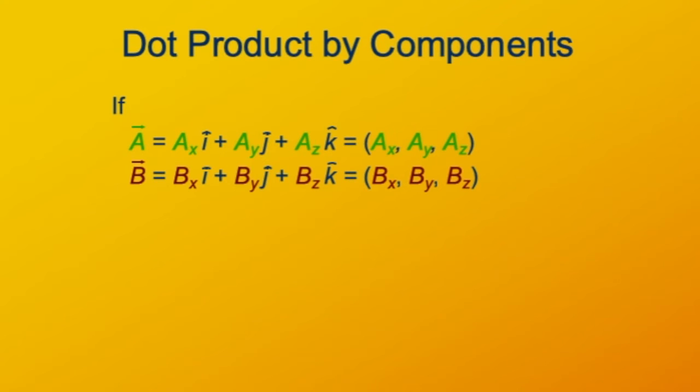The dot product of these two vectors A and B is given by the sum of the products of their components. You take the x components and multiply them together, the y components and multiply them together, and the z components and multiply them together. Then you sum those products.